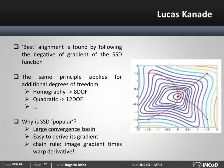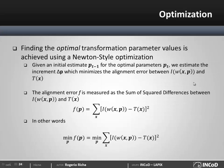The basin of convergence of the SSD is usually very big, and also its simple formulation is easy to derive. This will become more clear as we look at how we can differentiate it and find the increment of the transformation parameters that minimize the sum of square differences.